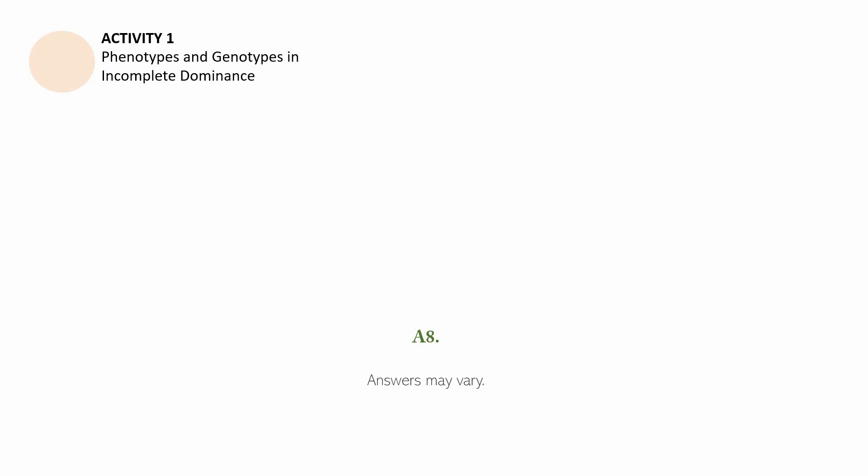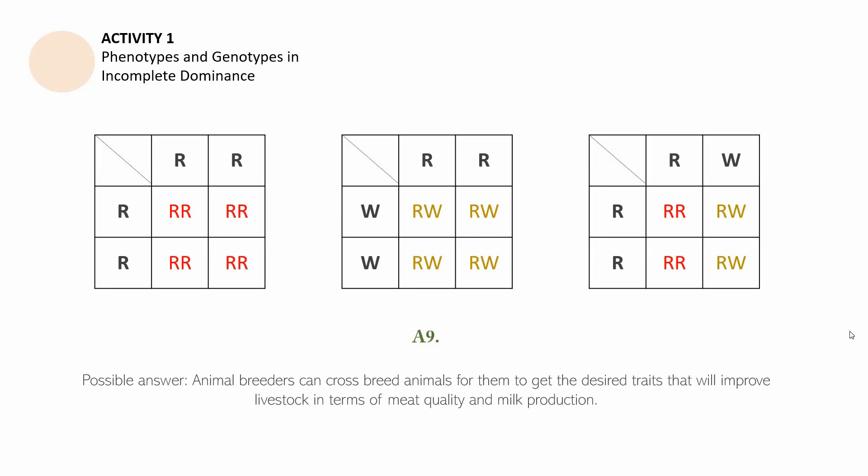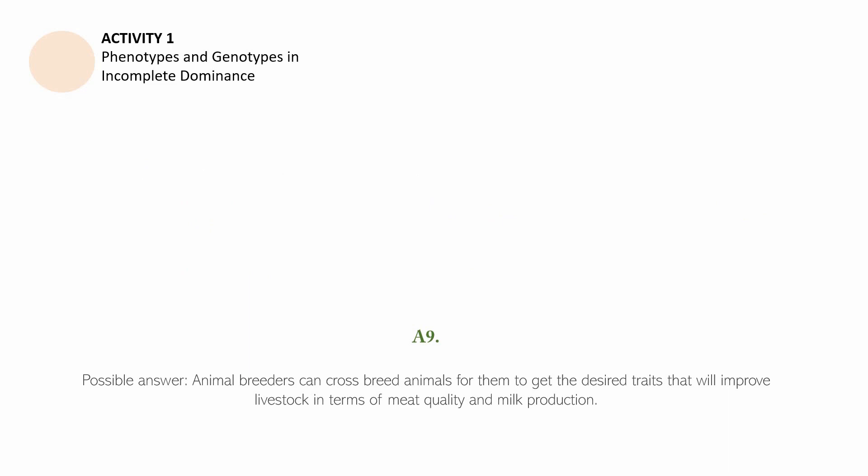Answer to question number seven: answers may vary. Answer to question number eight: answers may vary. The answer to question number nine is as follows. In the first Punnett square you see there, you all have red offspring in the cross between two red cows. Animal breeders can crossbreed animals for them to get desired traits that will improve livestock in terms of meat quality and milk production.